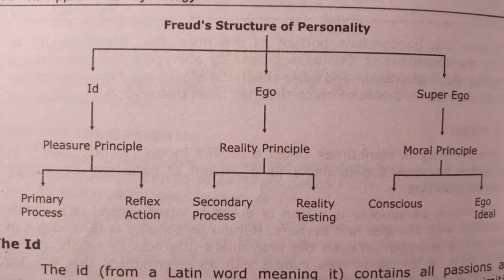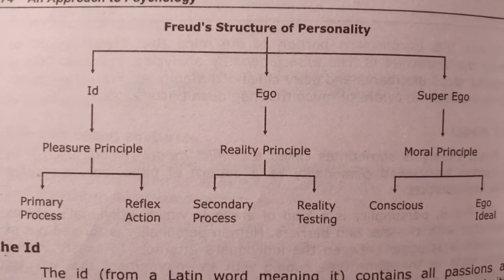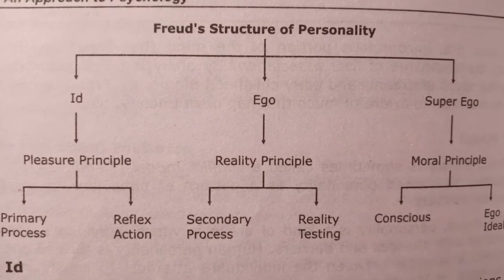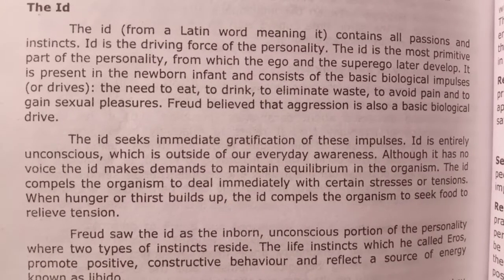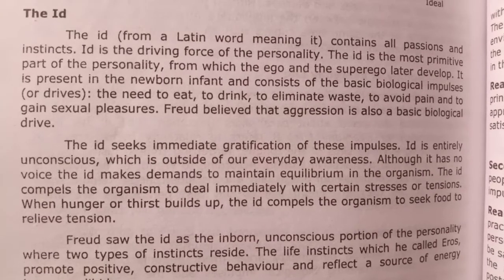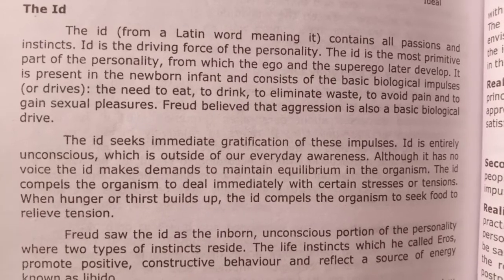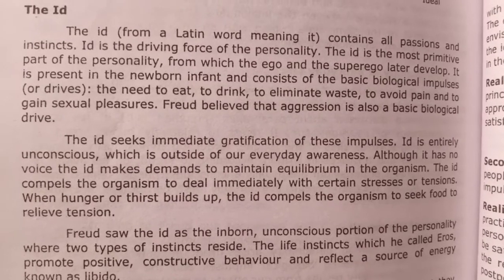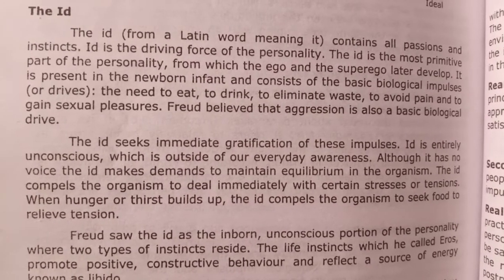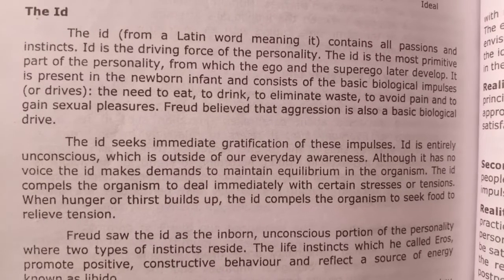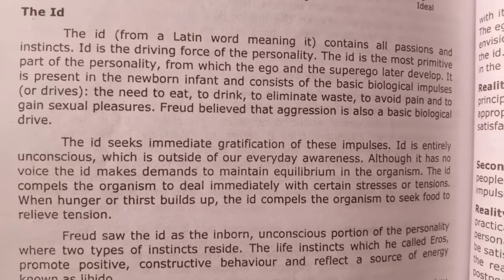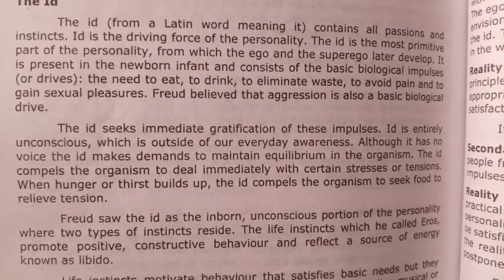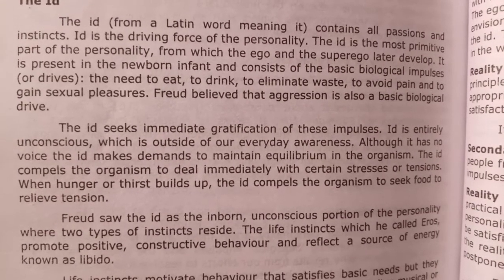The structure of personality consists of three systems: id, ego and superego. The id is ruled by the pleasure principle, which is really unprincipled. It refers to the total of emotions and instincts located in the unconscious. It has all the instincts and wishes that demand immediate satisfaction. The psychic energy in the id that motivates behavior is called libido. The id is inborn and is the unconscious portion of our personality. The id contains two kinds of instincts: life instinct and death instinct.